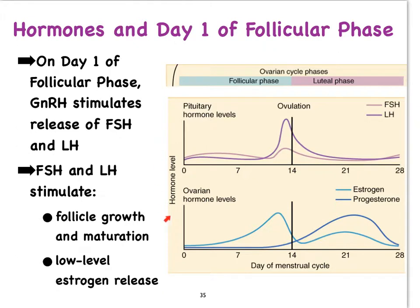With the help of this figure on your right — these graphs — we're going to learn about four major hormones: two produced by the pituitary, that is follicle-stimulating hormone (FSH) and luteinizing hormone (LH), and then some of the ovarian hormones, namely estrogen and progesterone, that regulate the ovarian cycle and therefore also the uterine cycle.